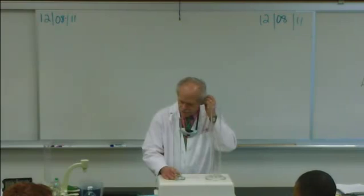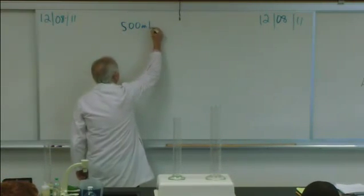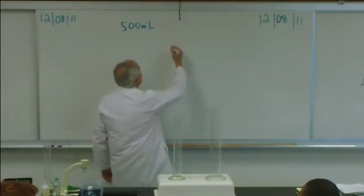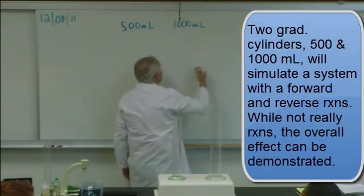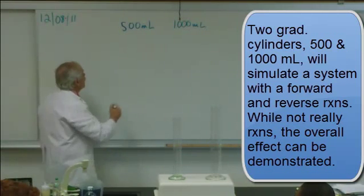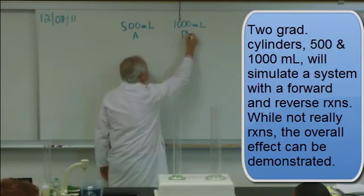Two graduated cylinders. I've got some reactant. We're just going to make it - it's got this name 500 mL, and then I got another one that was 1,000 mL. And we're going to call this A and we'll call this B.